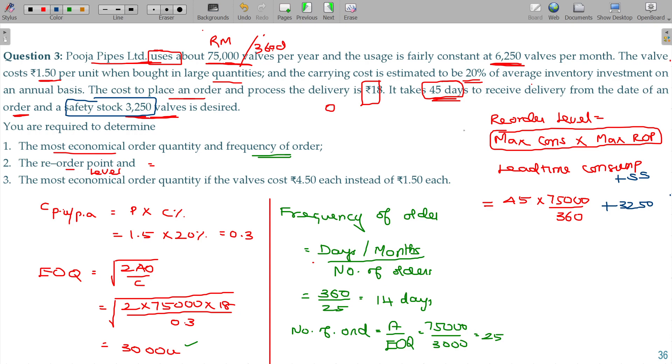Normal reorder level formula: maximum consumption times maximum reorder period, lead time consumption or reorder period consumption. Lead time - you have to wait for these days in order to receive. So lead time consumption plus the extra safety stock. By adding this, what is the reorder level here? 12,625 units.